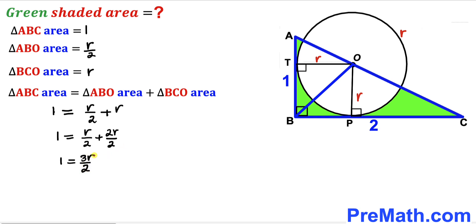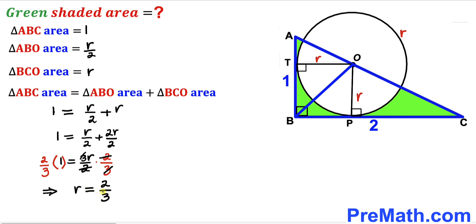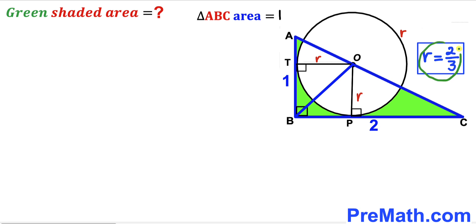Now we isolate the radius r by multiplying both sides by the reciprocal two-thirds. This cancels the twos and threes on the right-hand side, so the radius r turns out to be two divided by three units.